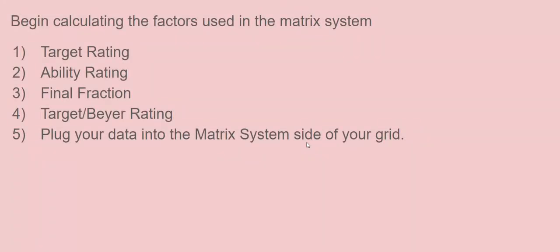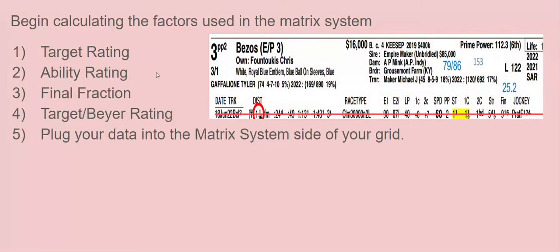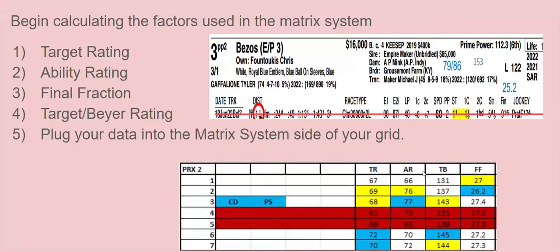Step two: Now I'm going to begin calculating the factors used in the matrix system—the target rating, the ability rating, my final fraction off the last race. And again, for this horse I used the same horse—the last race would have been two races back because I tossed the race last out. The target/buyer rating, which I've gone over—I've gone over all these factors in other videos on how to do them.